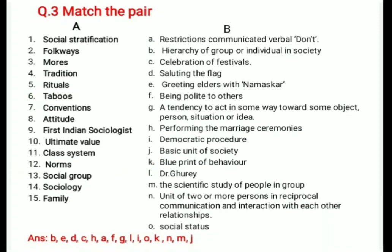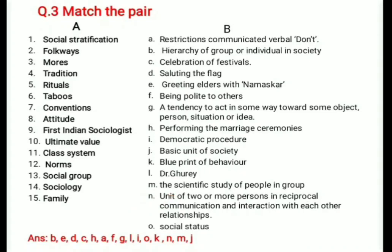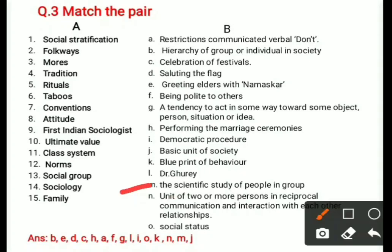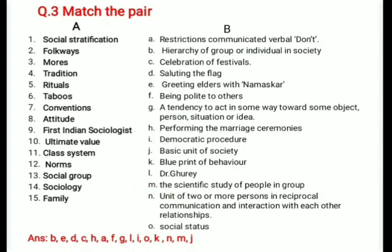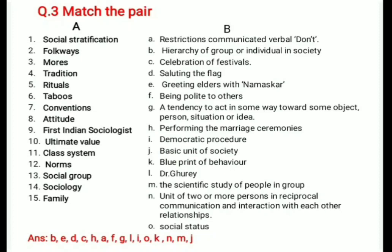Thirteenth: social group — answer is (n) a unit of two or more persons in reciprocal communication and interaction with each other. Fourteenth: sociology — answer is (m) scientific study of people in a group. Fifteenth: family — answer is (j) the basic unit of society.